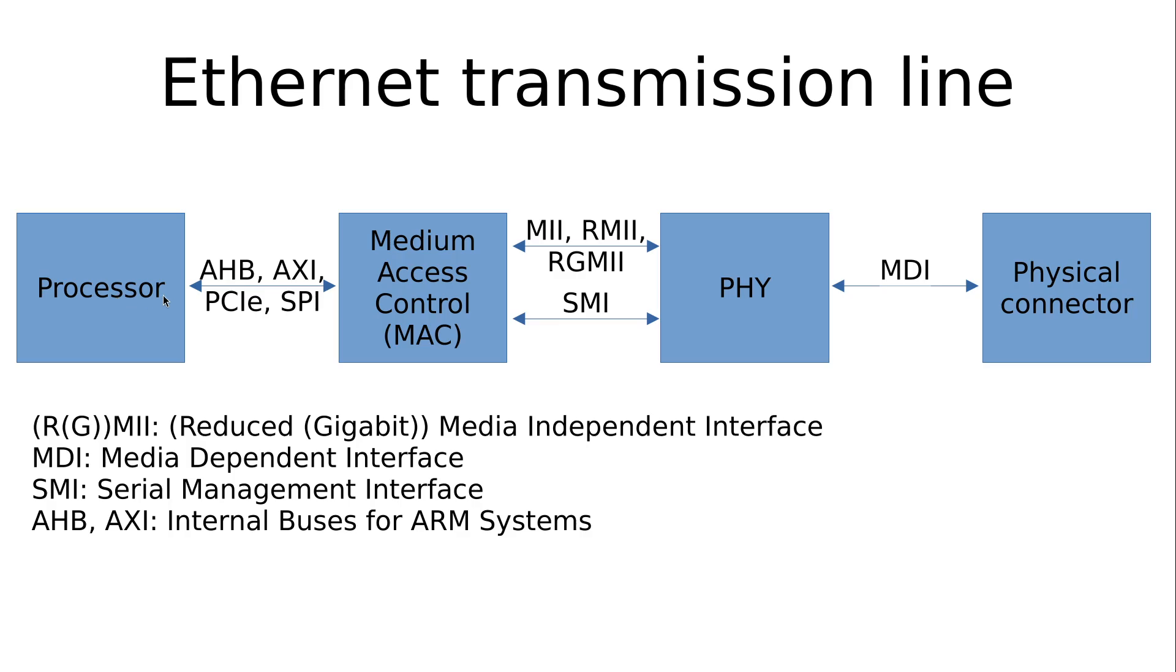Between the processor and the MAC we normally have some internal or external buses. For example, for ARM-based embedded systems we normally have the AHB or AXI bus to connect the processor to the MAC.